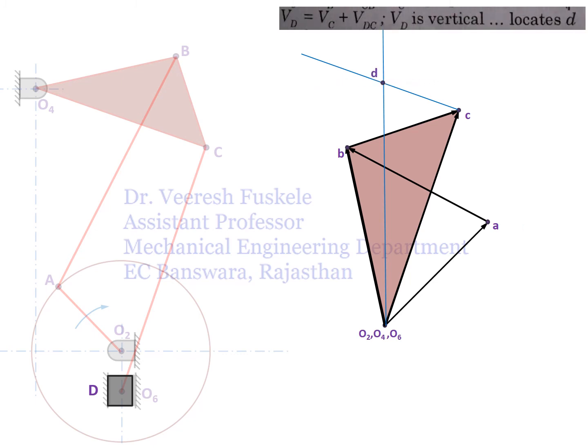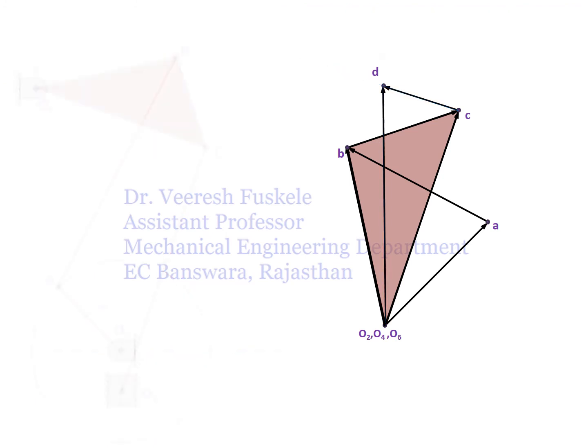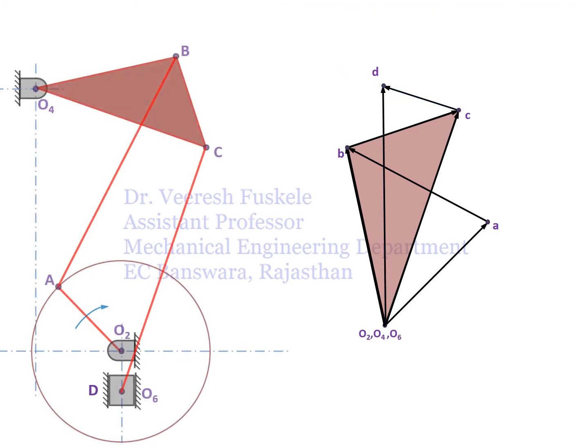The sense of the velocity of point D is determined by the relative velocity: the velocity of point D equals the velocity of C plus the velocity of DC. This completes the velocity diagram of the mechanism, and by measuring the velocity vectors we get the velocity of each and every link.